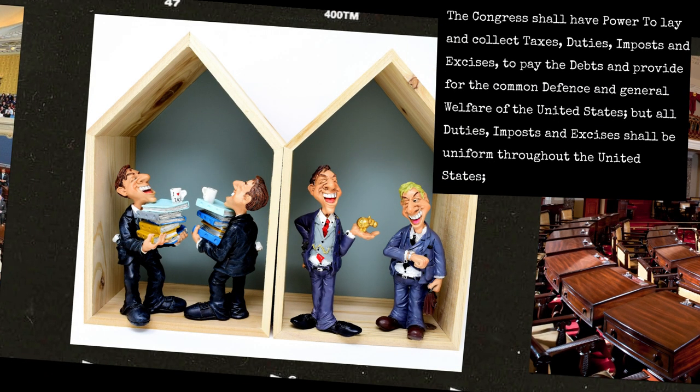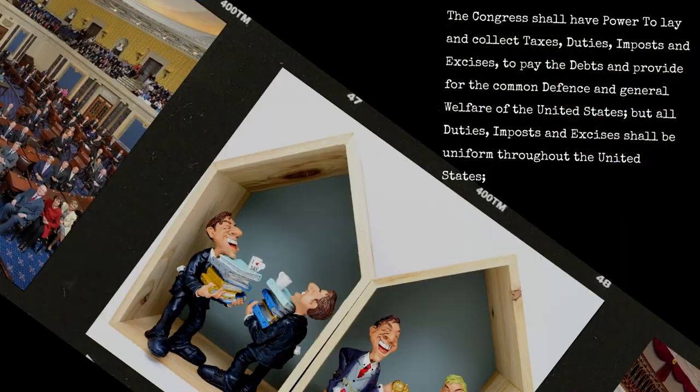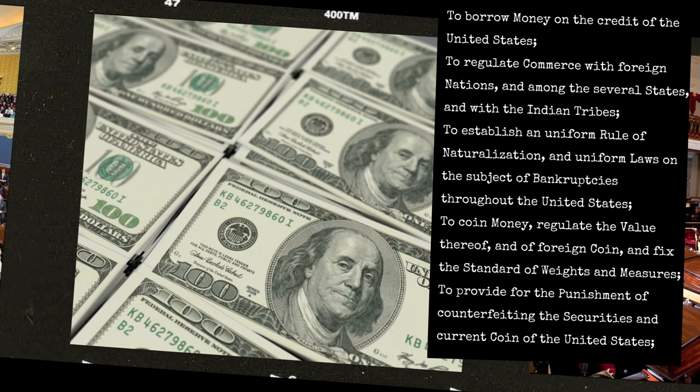The Congress shall have power to lay and collect taxes, duties, imposts, and excises to pay the debts and provide for the common defense and general welfare of the United States. But all duties, imposts, and excises shall be uniform throughout the United States. To borrow money on the credit of the United States. To regulate commerce with foreign nations and among the several states and with the Indian tribes. To establish a uniform rule of naturalization and uniform laws on the subject of bankruptcies throughout the United States.